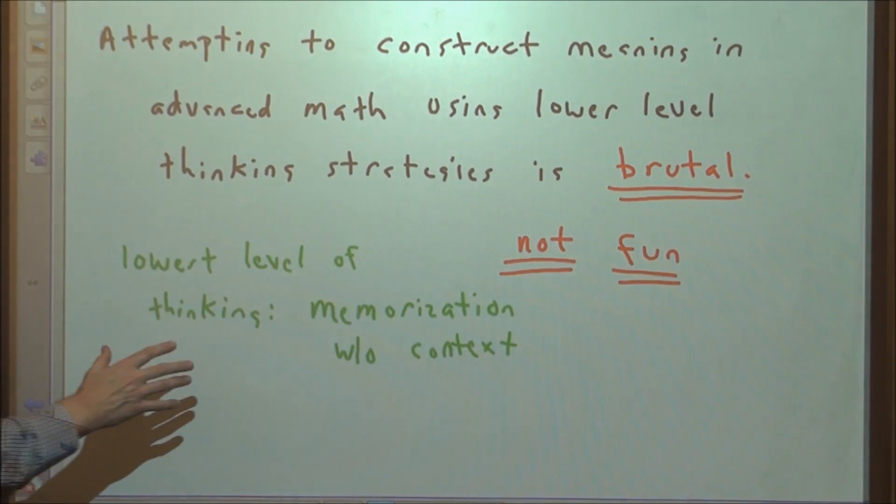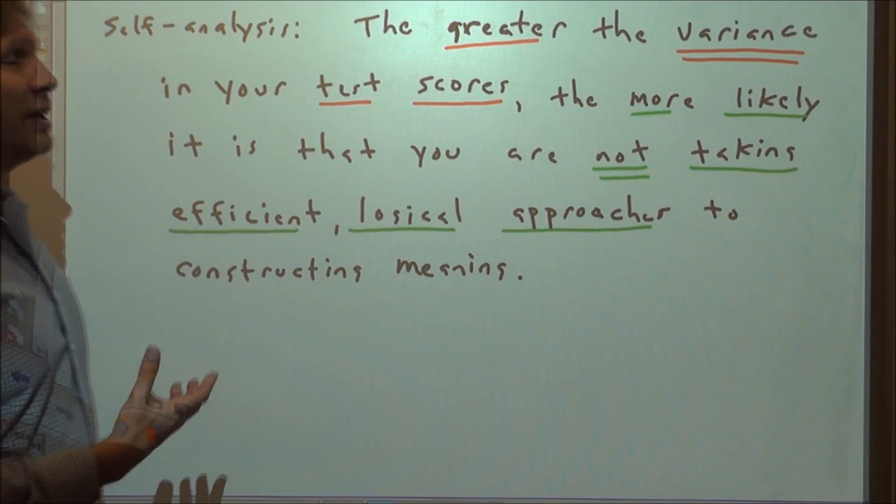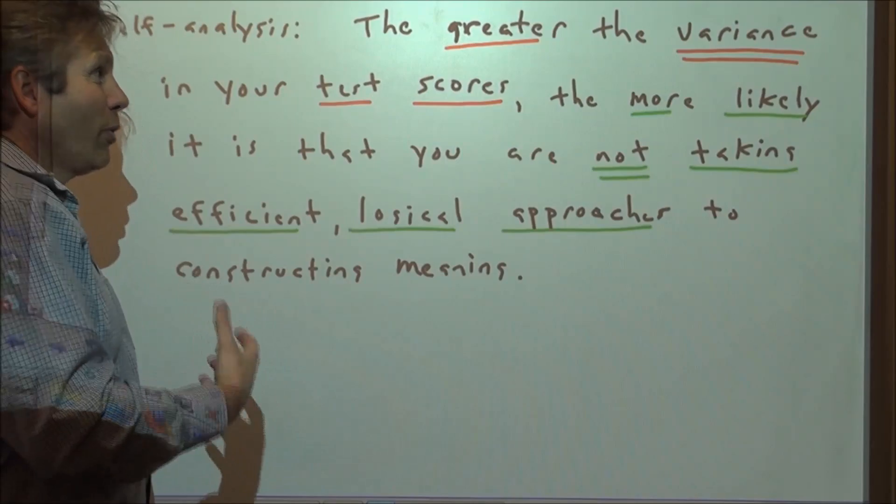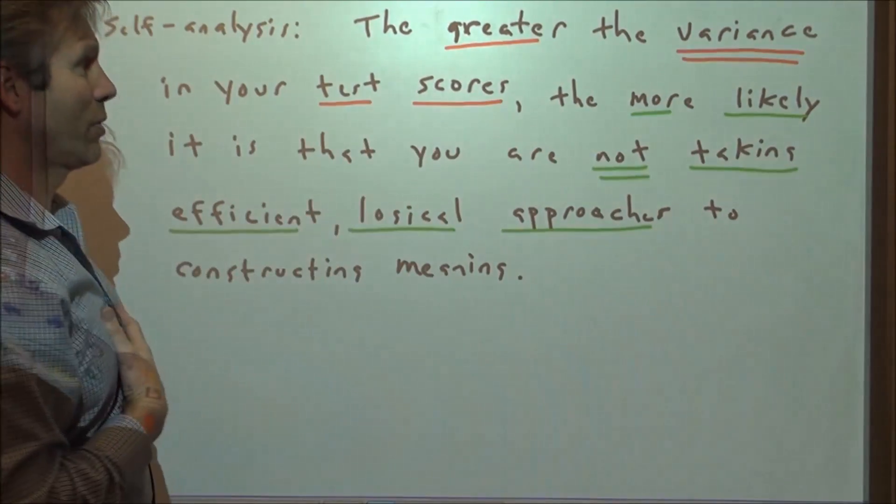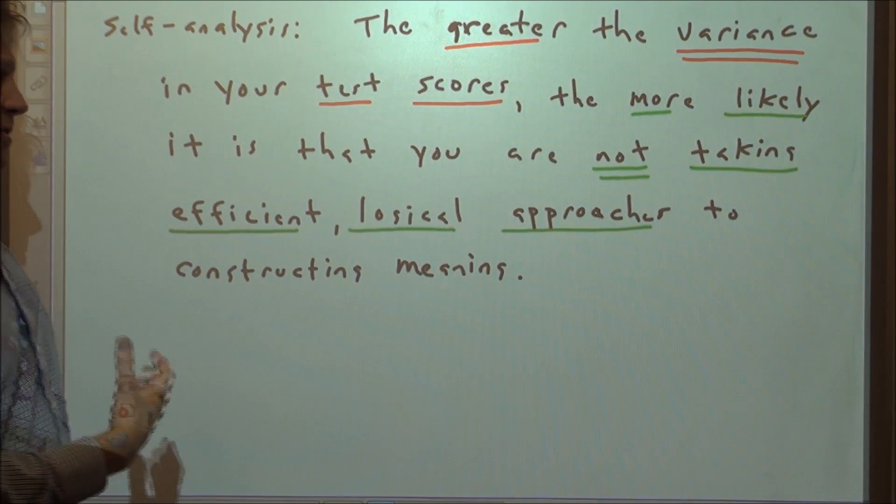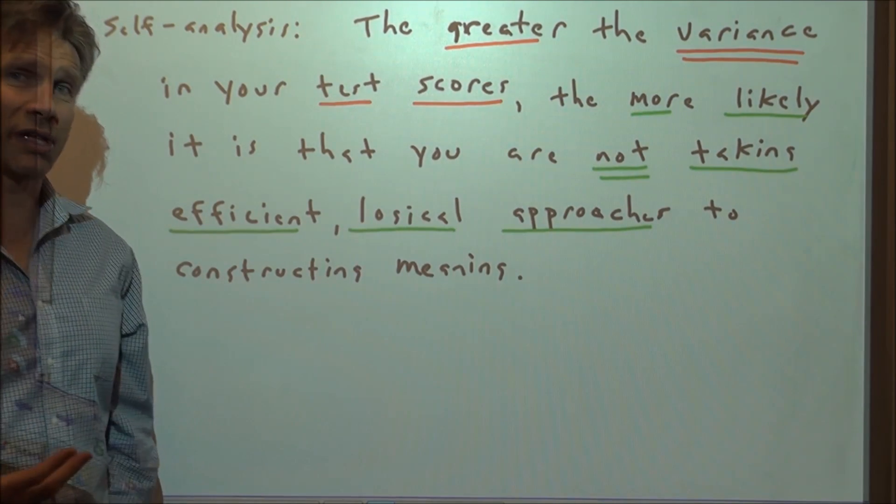The lowest level thinking is probably memorization without context. If we did a self-analysis, if we're in advanced math classes, the greater the variance in our test scores, the more likely it is that we're not taking efficient logical approaches to constructing meaning.